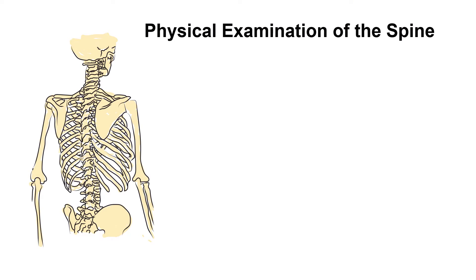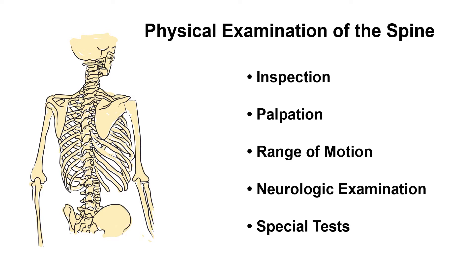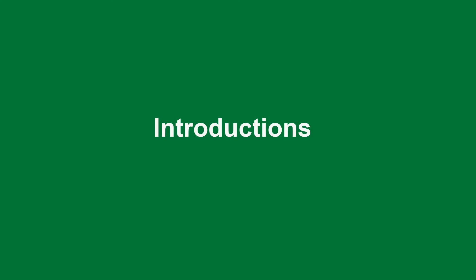Let's look at the different parts of the physical examination for the spine. So initially we're going to do inspection, followed by palpation, and then range of motion of the various parts of the spine. Then we'll do a neurologic examination, which will include motor examination, sensory examination, and reflex testing. Finally, we'll do special tests at the end. At the end of this video, you should be able to perform a physical examination of the spine.